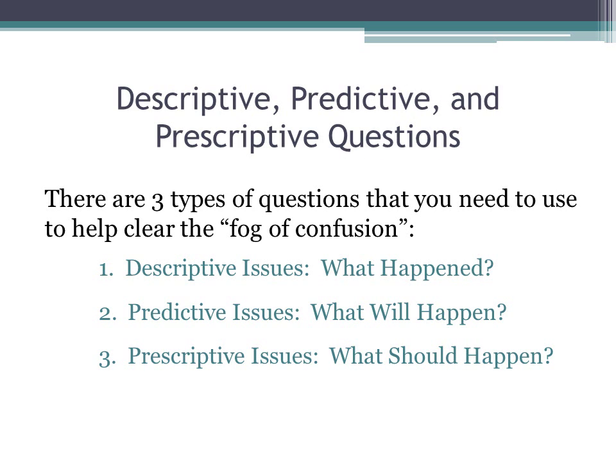Now we're going to look at some questions that will help clear up the fog of confusion. First, we have descriptive issues or questions, which basically means we're asking what happened. Predictive issues, as suggested by the word predict, means what will happen. And prescriptive is what should happen.